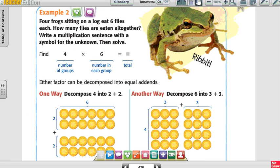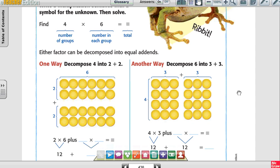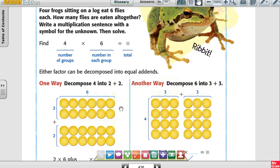Look at example number 2. 4 frogs sitting on a log eating 6 flies each. How many flies are eaten altogether? So one way to do it is to decompose 4. What 2 numbers make 4? They're the same? 2 plus 2. So he had 4 number of groups. There were 4 groups. 1, 2, 3, 4.